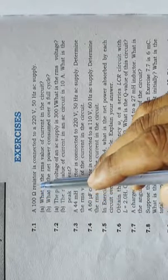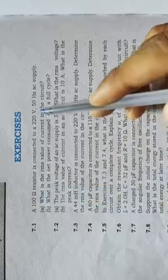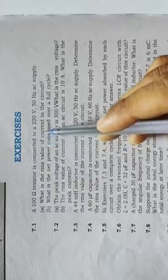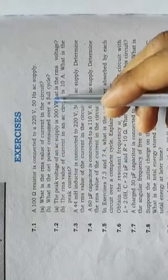In this question, we are given resistor means resistance 100 ohm, voltage and frequency. We find out RMS current in circuit and net power consumed in the cycle.